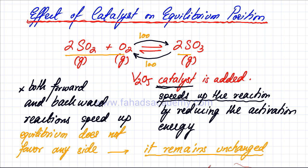So both reactions speed up, but the net amount or the net quantity of SO2, O2, and SO3 would remain exactly the same. If 100 get consumed, 100 would be formed again. So there would be no effect on the equilibrium position or the amount of SO3, O2, or SO2.